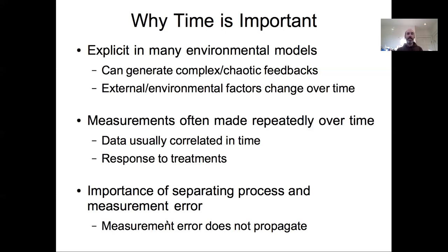This partitioning matters because measurement error does not propagate forward in time — our imprecision in measuring something right now does not change the actual dynamics of the system over time. By contrast, process error most definitely does propagate forward. If we treat data as independent when it's not, we tend to be overconfident. Autocorrelation in data reduces the effective sample size, just as with MCMC outputs. But by failing to partition process and measurement error, we become too pessimistic if we treat all residual error as propagating forward.